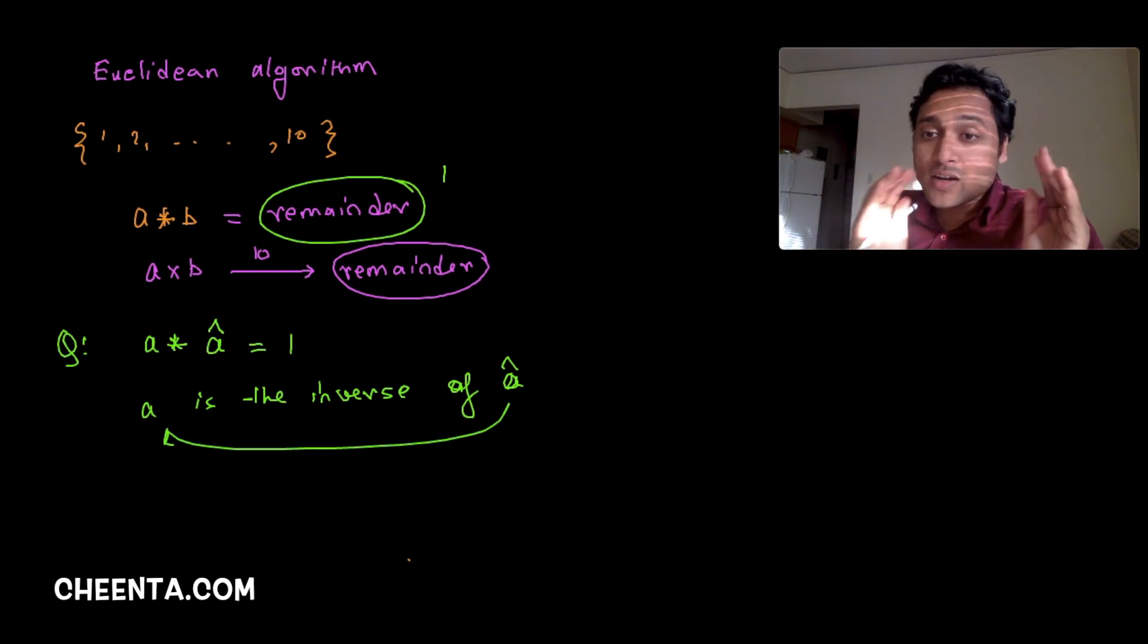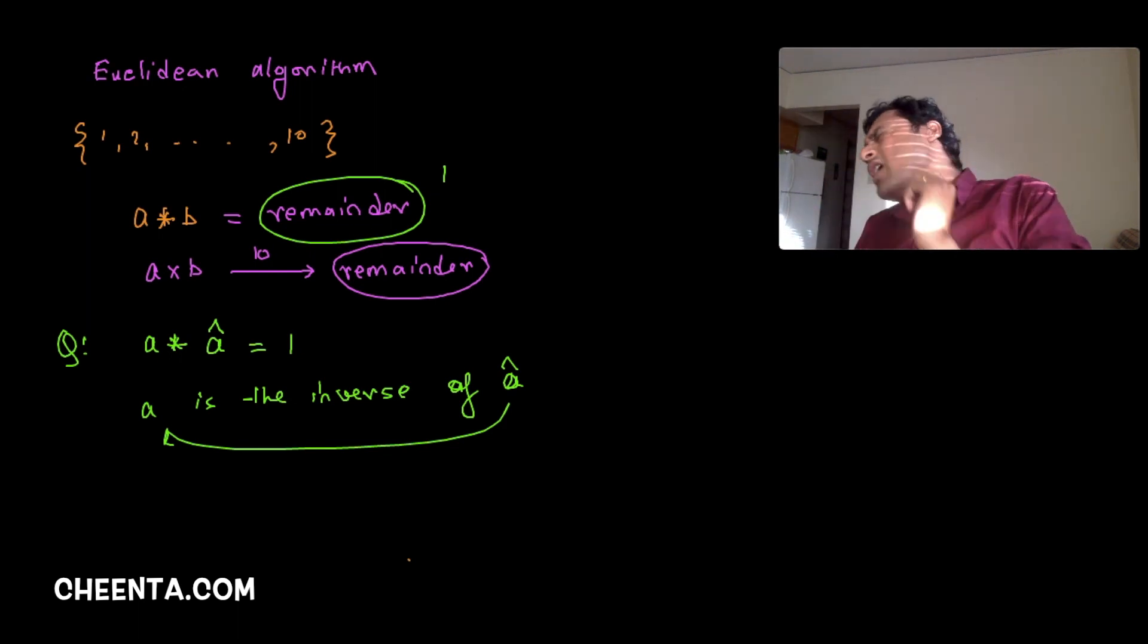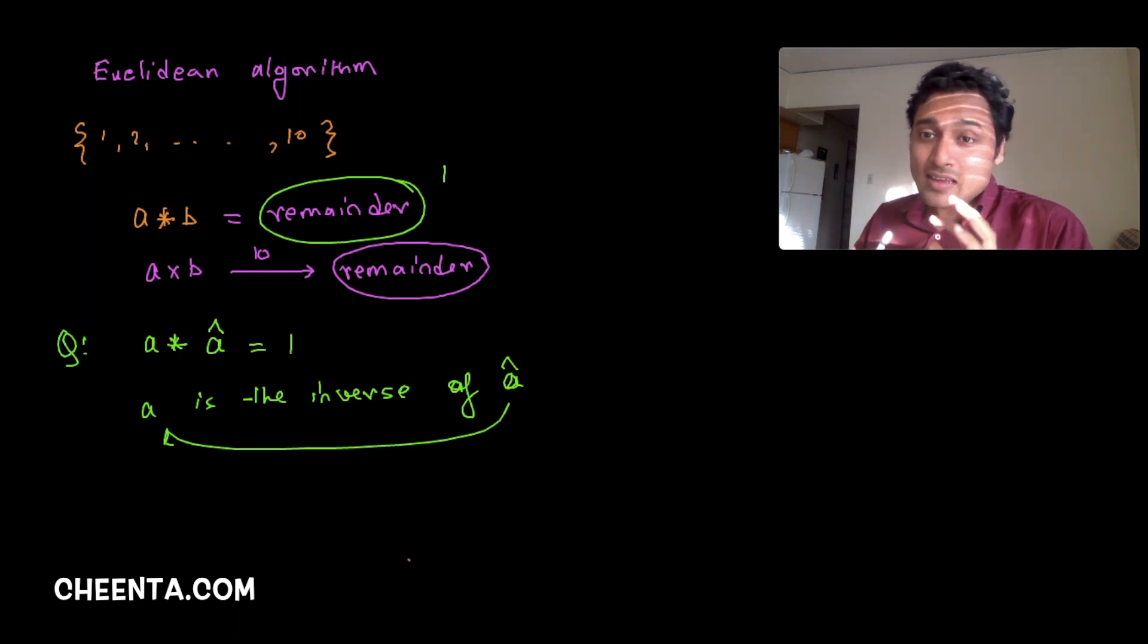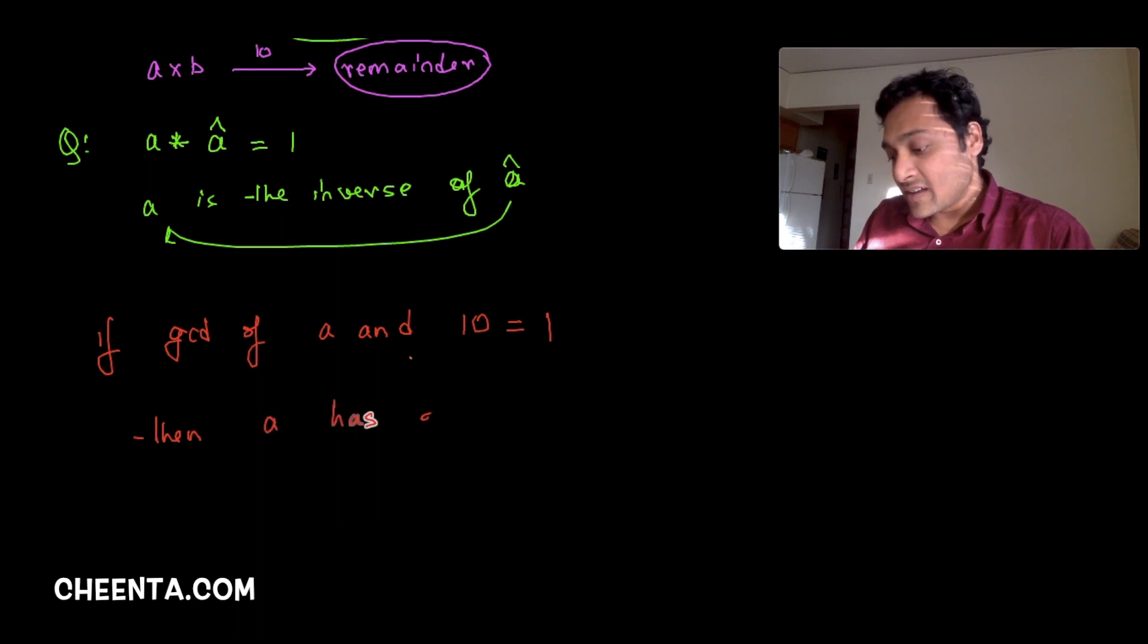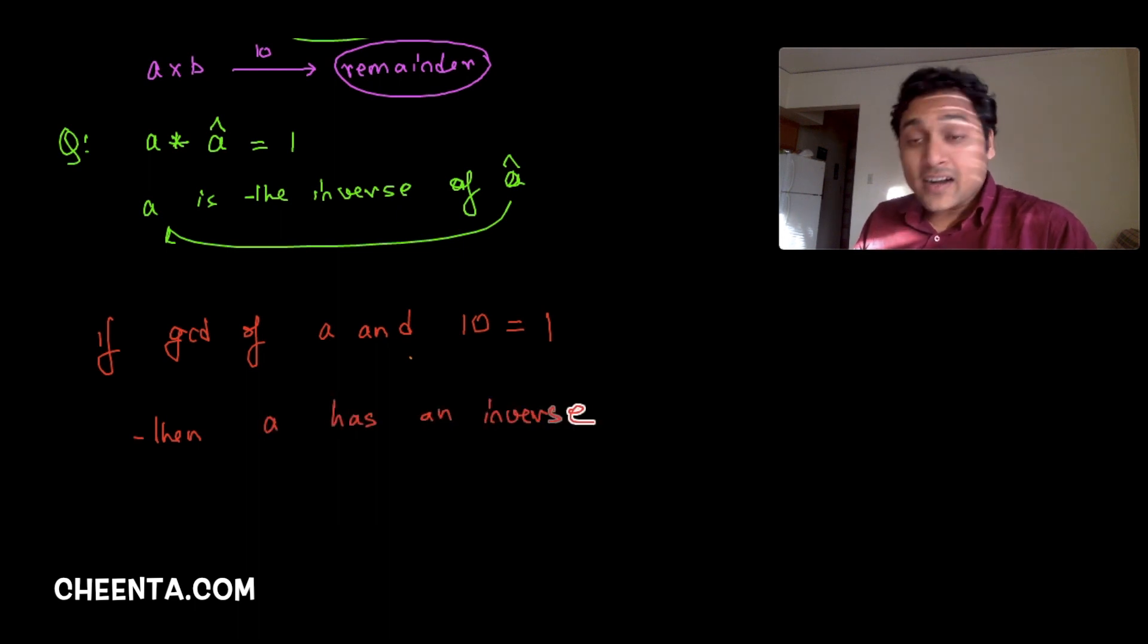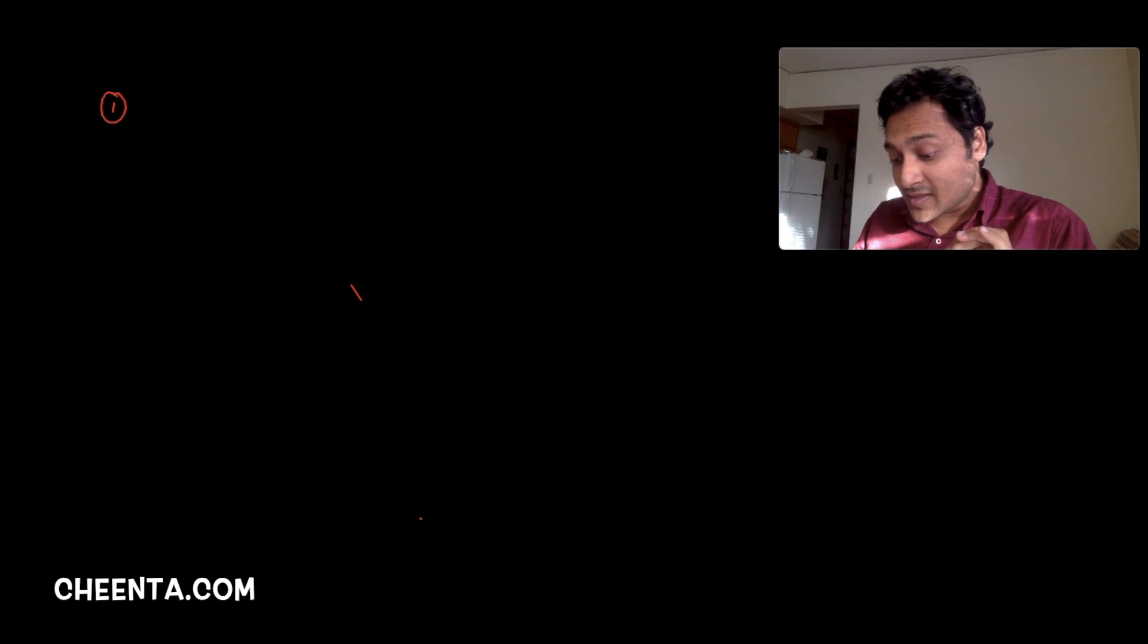So the question is when does a particular number have an inverse? We found that there is a way to actually find the inverse of a number, given the fact that if GCD of a and 10 is equal to 1, then a has an inverse.